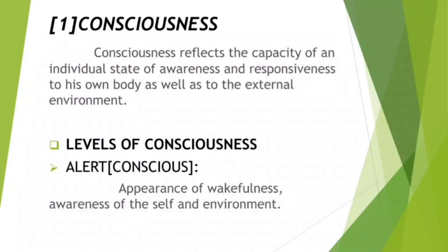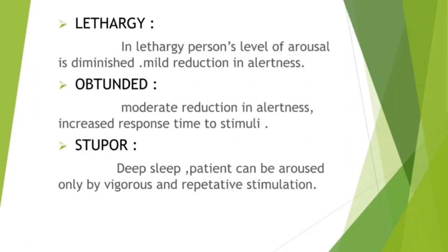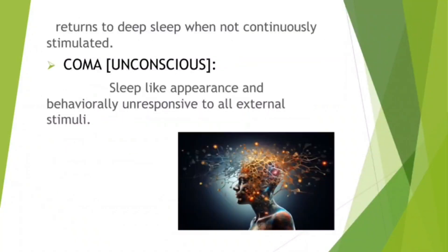Alert: conscious, appearance of wakefulness, awareness of the self and environment. Lethargy: person's level of arousal is diminished, mild reduction in alertness. Obtunded: moderate reduction in alertness, increased response time to stimuli. Stupor: deep sleep — patient can be aroused only by vigorous and repetitive stimulation and returns to deep sleep when not continuously stimulated. Coma: unconsciousness — sleep-like appearance and behaviorally unresponsive to all external stimuli.